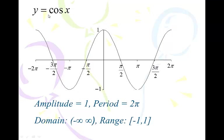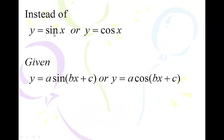Now we're going to play with it. We're going to put values in front of the sine or cosine, put values in front of the x value, and add or subtract values inside the parentheses. So instead of y = sin(x) or y = cos(x), we're going to have y = a·sin(bx + c) or y = a·cos(bx + c). The phase shift is where we're moving it right or left.